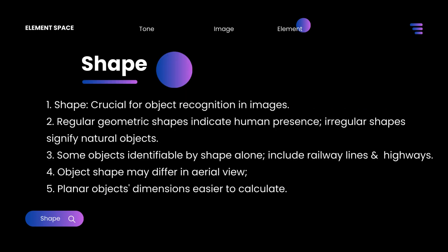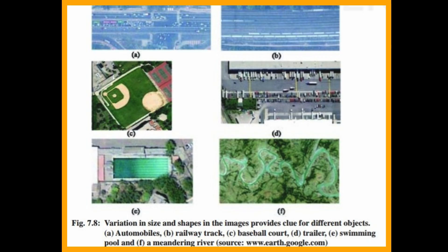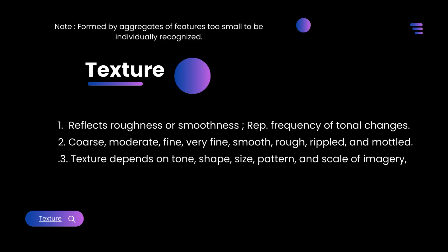Shape is crucial for object recognition in images. Regular geometric shapes indicate human presence, while irregular shapes signify natural objects. Some objects identifiable by shape alone include railway lines and highways. Object shape may differ in aerial view, and planar object dimensions are easier to calculate. The figure shows how size and shape can assist in identification of variations in digital images.